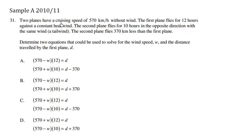We have two planes cruising at a speed of 570 km without wind. The first plane flies for 12 hours against a constant headwind. So the idea of a headwind is going to make this plane slow down. Recall the formula? Distance equals velocity times time. Here we have the velocity and we have the time, 12 hours.